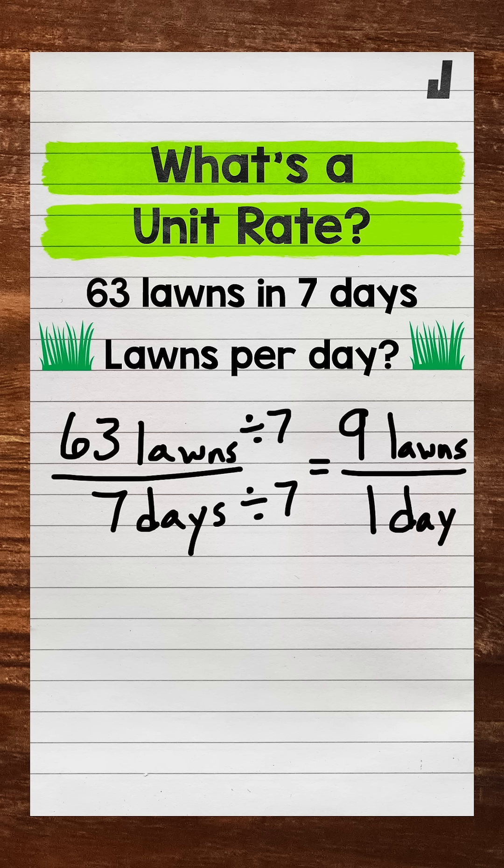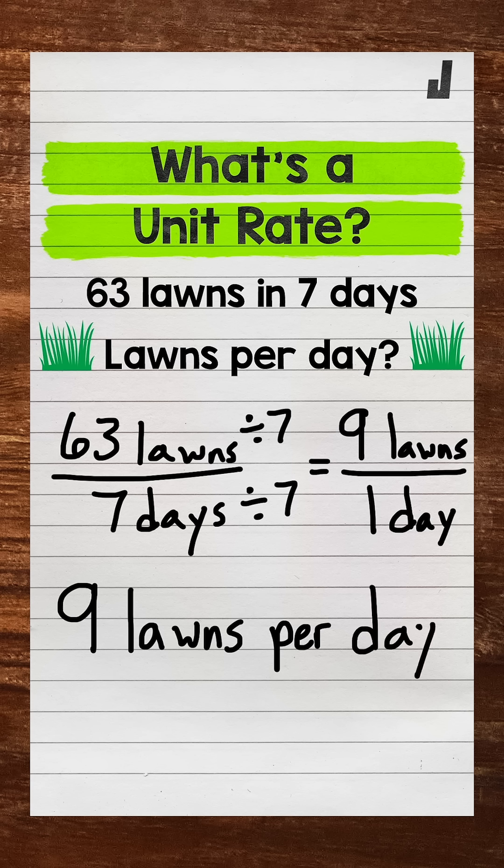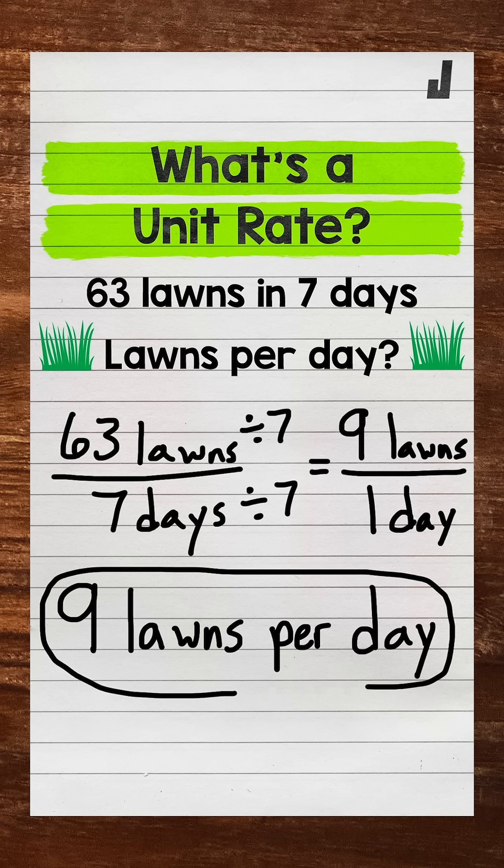Our unit rate is nine lawns per one day. With unit rates, we use the word per. We have per one unit, per one day in this case. And we can write this out as nine lawns per day. And this is our unit rate.